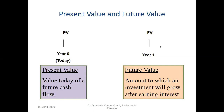Present value is the value today of a future cash flow. Cash flow can be an inflow (positive sign — receiving money) or an outflow (negative sign — investing or paying money). Future value is the amount to which an investment will grow after earning interest. For example, if you invest 100 rupees today at 10% per annum, after one year it becomes 110. So 110 is the future value, and 100 is the present value of 110 discounted at 10%.